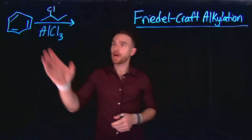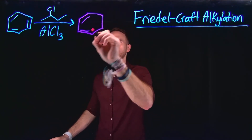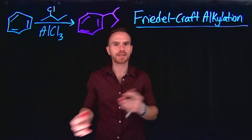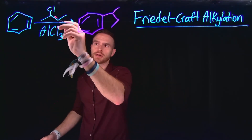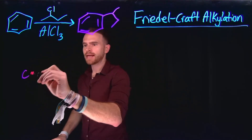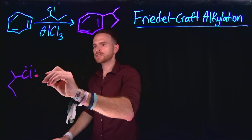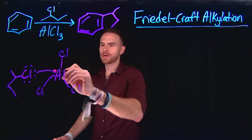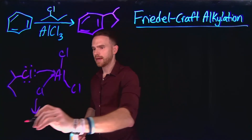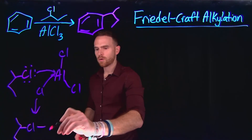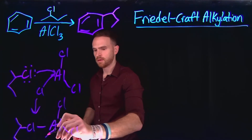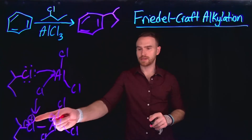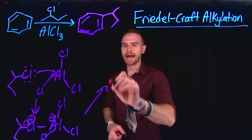Now let's talk about Friedel-Crafts alkylation, a useful method for forming a new carbon-carbon bond at benzene. Following the same principles as previously discussed, the first step should be activation of an alkyl chloride with aluminum trichloride. Just like before, the first step is that activation step where we are producing an activated species by attacking from the chlorine to the aluminum, generating an activated intermediate where now we have a great leaving group at the chlorine position. So these electrons can kick off to the chlorine, thus generating an active carbocation.